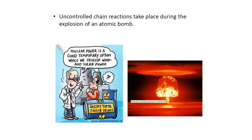Uncontrolled chain reactions take place during the explosion of an atomic bomb, as we already saw in the previous lecture. Here is a humor cartoon showing a very nice comment: 'Nuclear power is a good temporary option while we develop wind and solar power.' But what is that good temporary option? The decay time of nuclear waste is about 7.3 to 1.8 million years — a huge time.